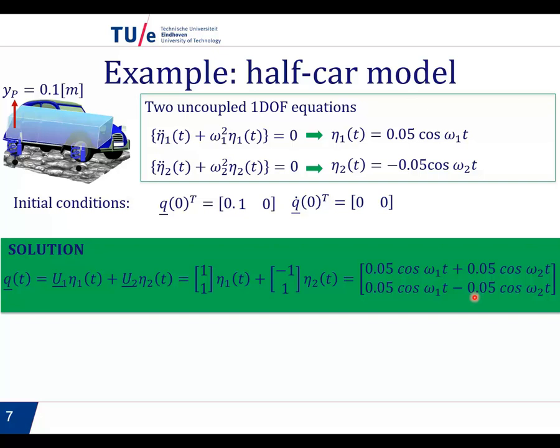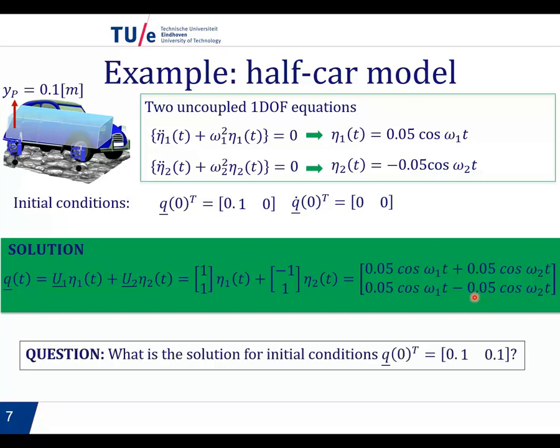I would like to give you a question to think about, because what would be the response if the initial conditions are this? 0.1, 0.1. So we give both ends of the mass an initial displacement of 0.1, and then we let loose. What will be the solution we get here? Think about it.